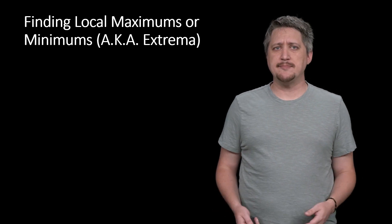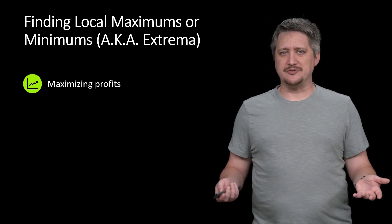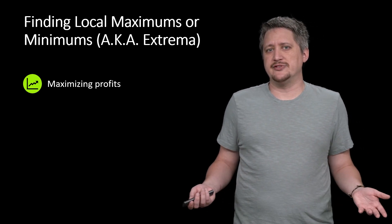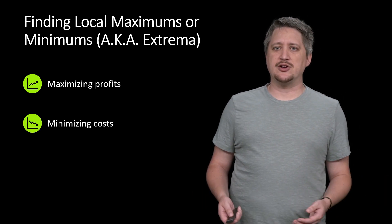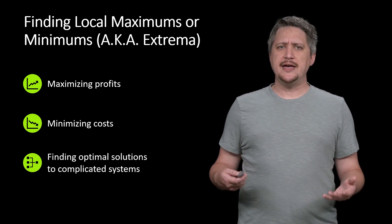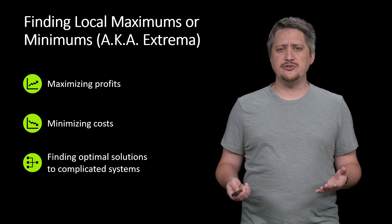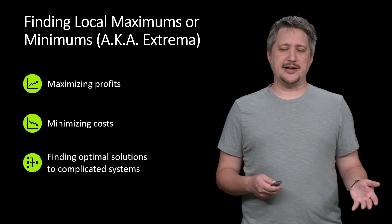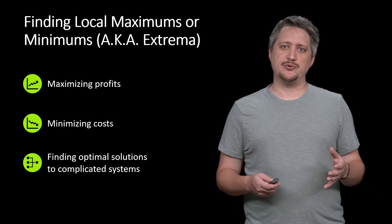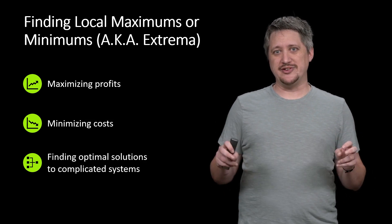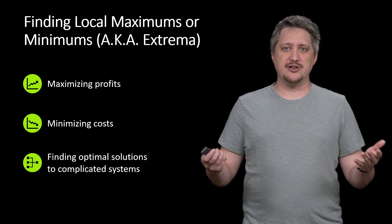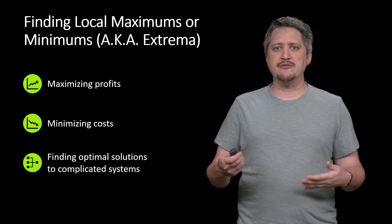So just by way of a few examples, obviously maximizing profits - finding a maximum is a type of extrema. Minimizing costs, same kind of idea. And even finding some optimal solutions to complicated systems usually comes down to finding a maximum or minimum sort of best result in some sense, which again, is stuff we'll look at in the future, but just by way of motivation.